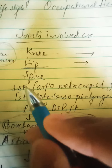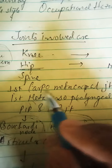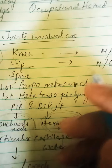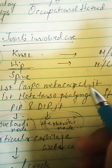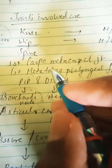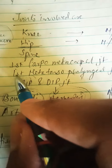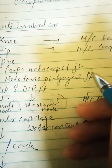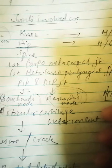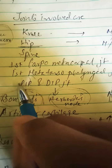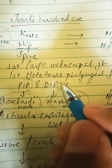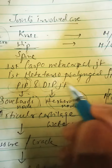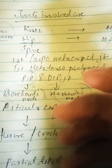It also involves the first carpometacarpal joint of the hand and the first metatarsophalangeal joint of the foot. It mainly involves the proximal interphalangeal (PIP) and distal interphalangeal (DIP) joints of the hand.